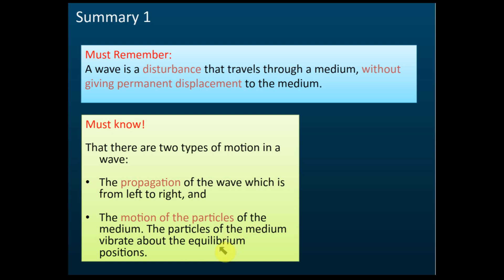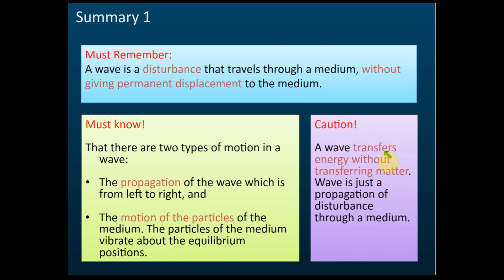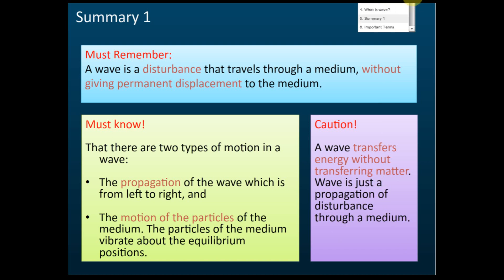The second type of motion is the motion of the particles of the medium. The medium only vibrates about a fixed or equilibrium position. Most importantly, a wave transfers energy without transferring matter. The medium just oscillates at a fixed position.